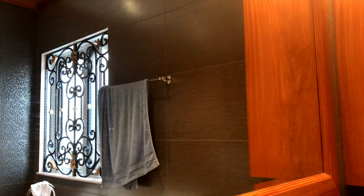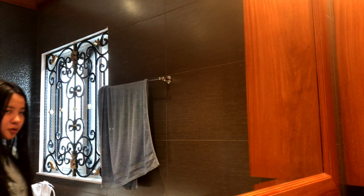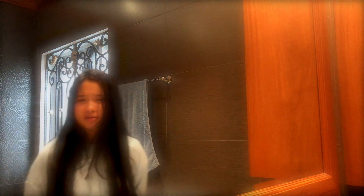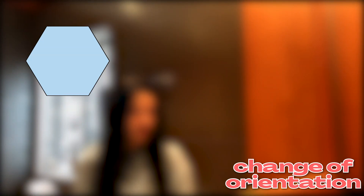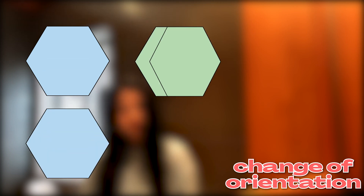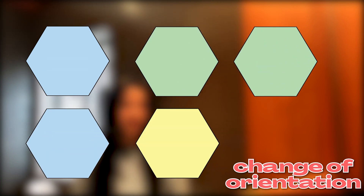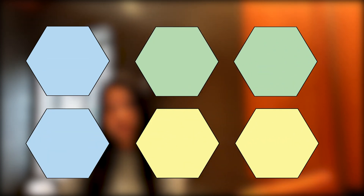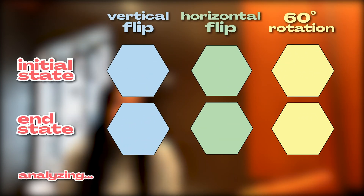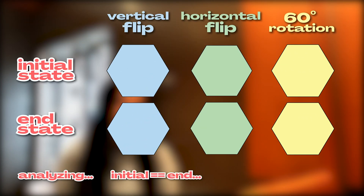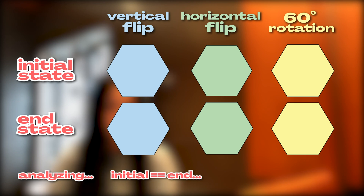But what exactly is symmetry? When we think about symmetry in our daily lives, we're imagining a change of orientation — from up to down, left to right, and even rotations. If the initial and end result looks the same after we apply these changes, we call it symmetric.